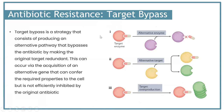Target bypass is a strategy that consists of producing an alternate pathway that bypasses the antibiotic by making the original target redundant. The bacteria can create an alternate enzyme that the antibiotic cannot bind to, so it has no effect. It can also create an alternative target, which I'll show an example of soon, and it can cause an overproduction of the target so that it's too much for the antibiotic to have any effective effect.